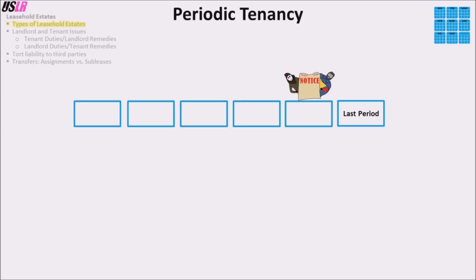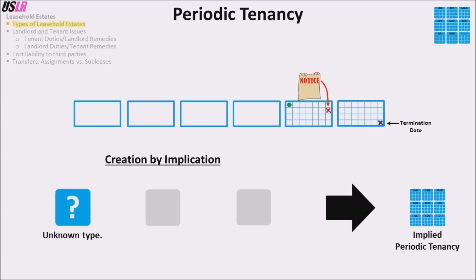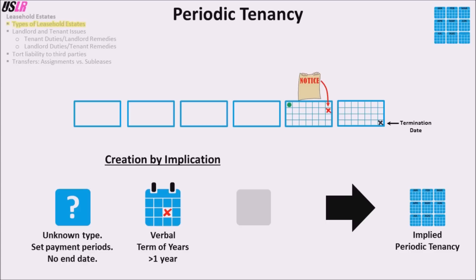Notice of termination is best understood with an example. If a month-to-month lease began on the first of the month, the period for notice of termination is one month. If notice is given on the 14th, the termination date is not the 14th of the following month but the last day of the following month. A periodic tenancy is usually created by implication in three ways: a property is leased without reference to the type of leasehold but with set payment periods and no end date; a verbal term of years for more than one year violates the statute of frauds; or a leasehold ends and the landlord accepts rent from a tenant who wrongfully continues to stay.